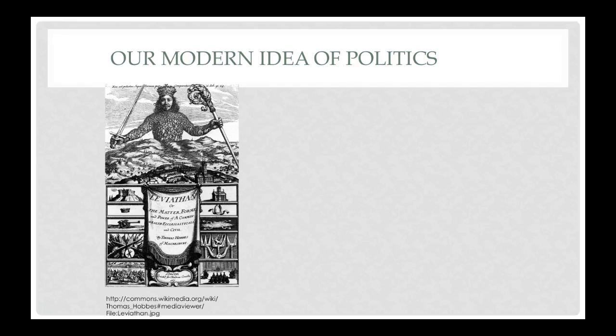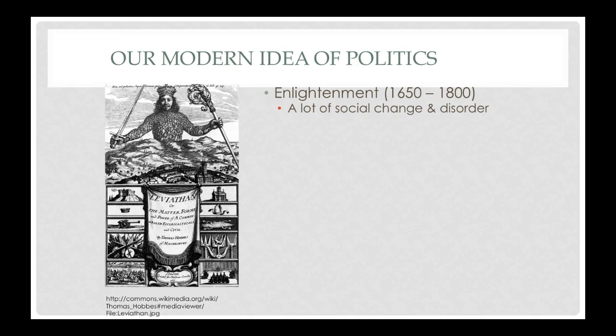If our modern idea of what a political system or government is isn't truly the natural way that humans function in their political sphere, it had to come from somewhere. I just want to go over really quickly where our modern idea of politics actually came from — and that starts during the Enlightenment, from the mid-1600s to the 1800s.